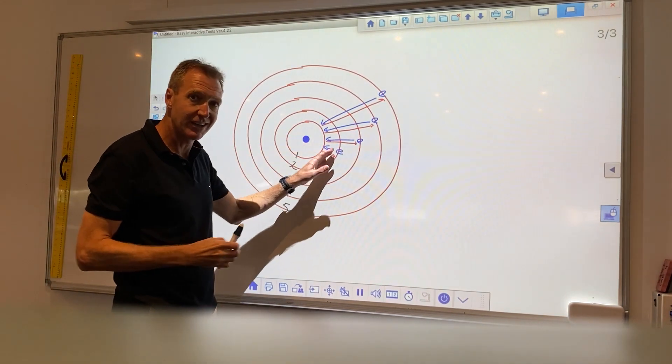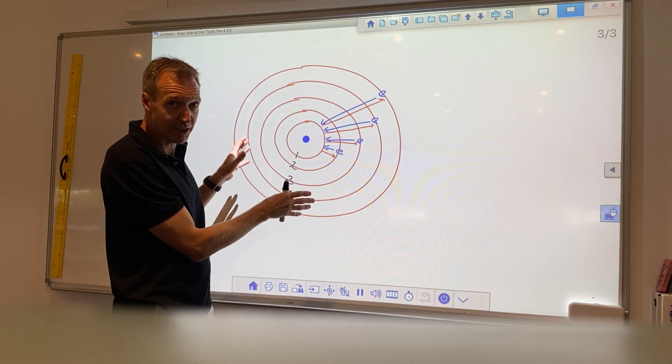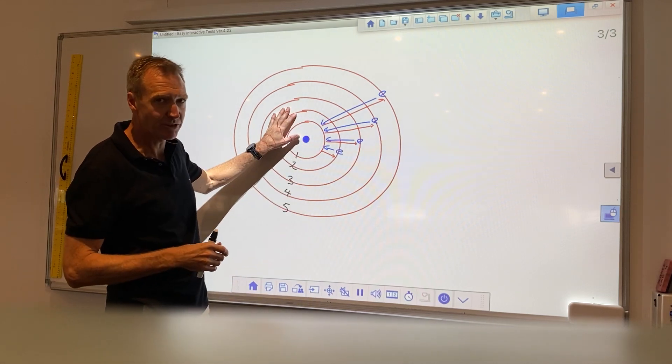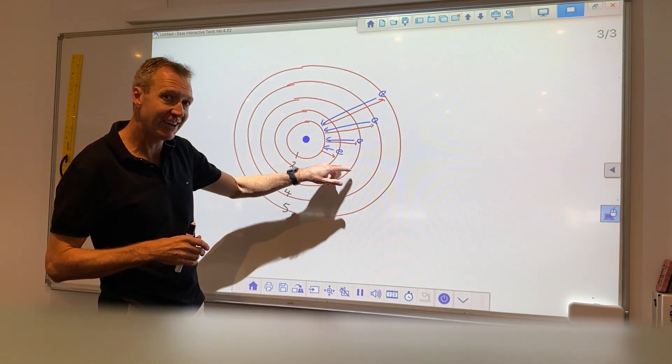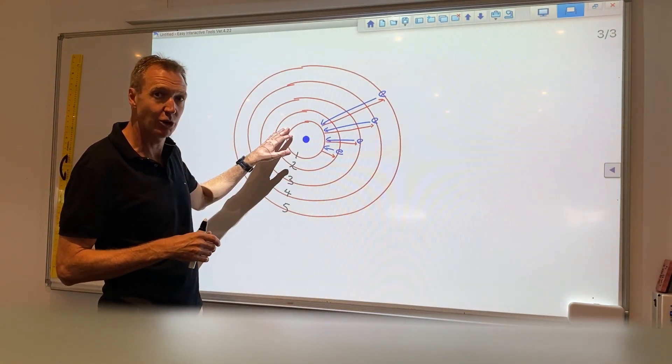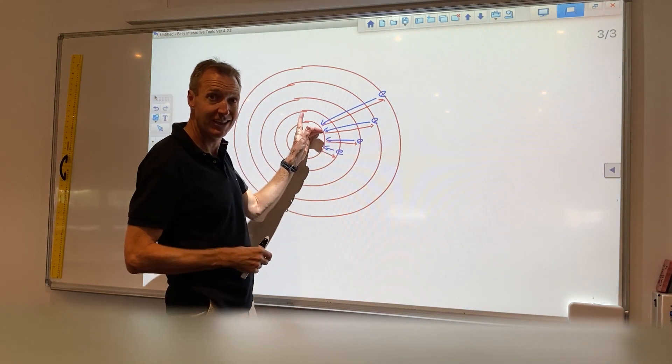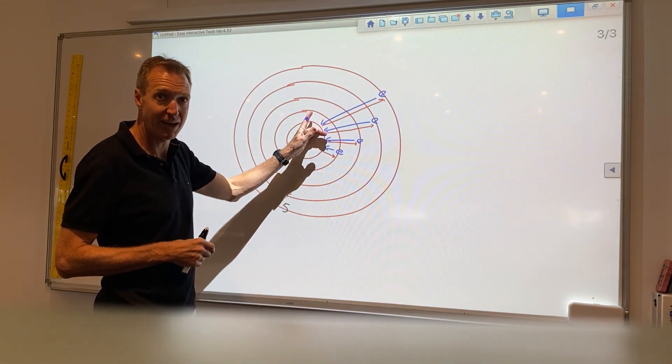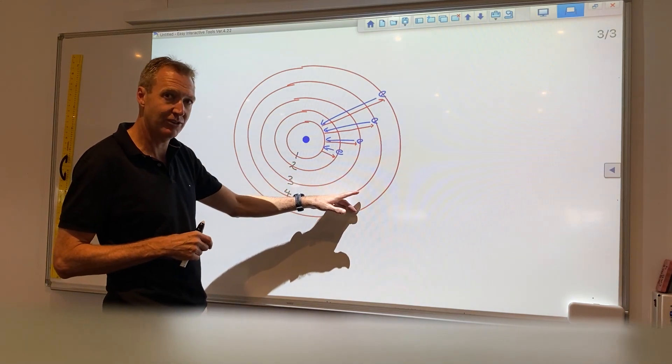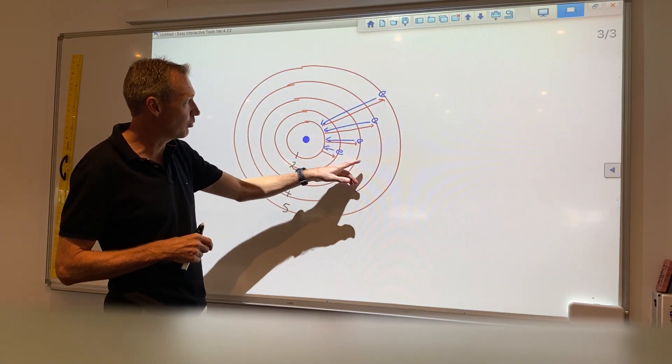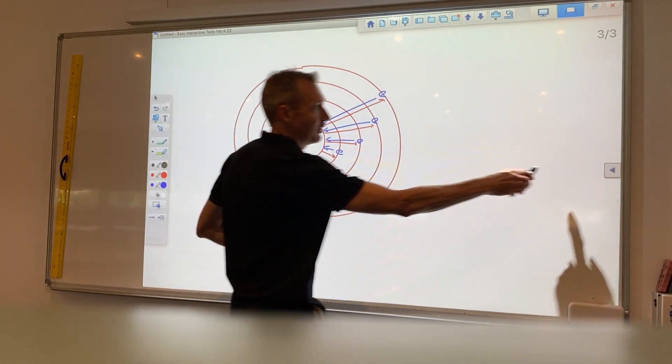This is where something like the Bohr model explains it so well. You remember all this stuff happened before the Bohr model was invented, but we know now that electrons jumping energy shells is actually what is releasing the energy, the electromagnetic energy. And of course, we know now that it's all quantized, it has to go in stepwise form. So I'm just going to go on to a little slide.